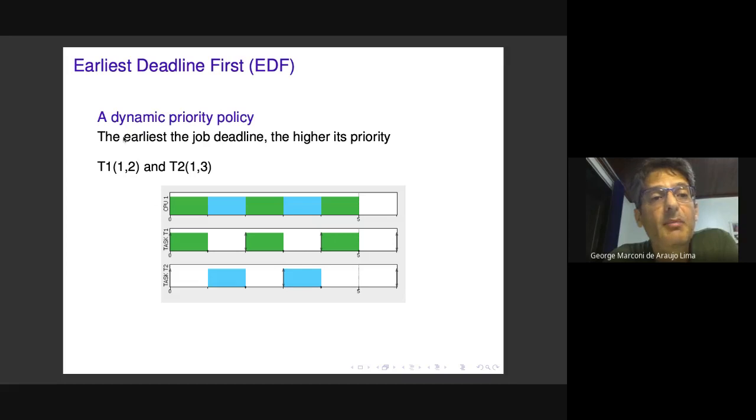For dynamic priority scheduling, we're talking about EDF, the algorithm we're experimenting with. The assignment of priority is based on the deadline of the task job, which means priority can change because the deadline changes during runtime. The highest priority is assigned to the task with the earliest deadline.